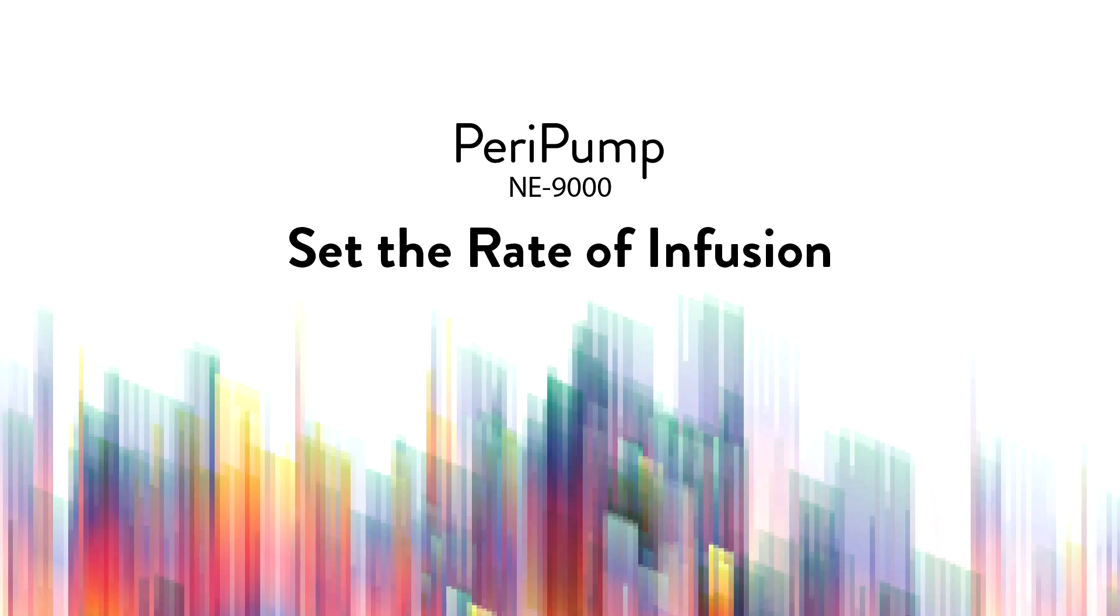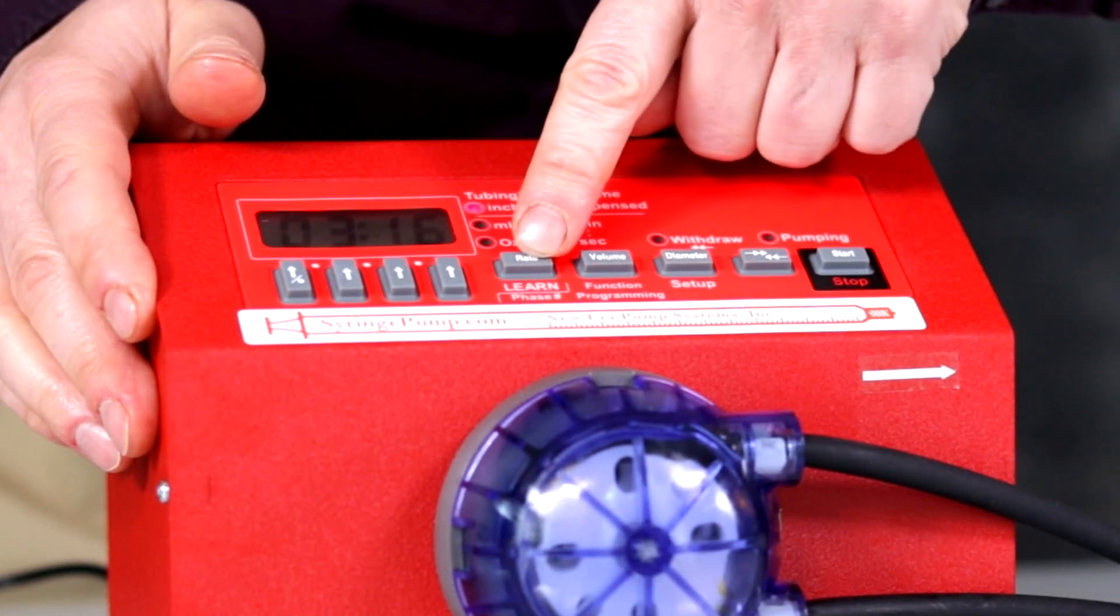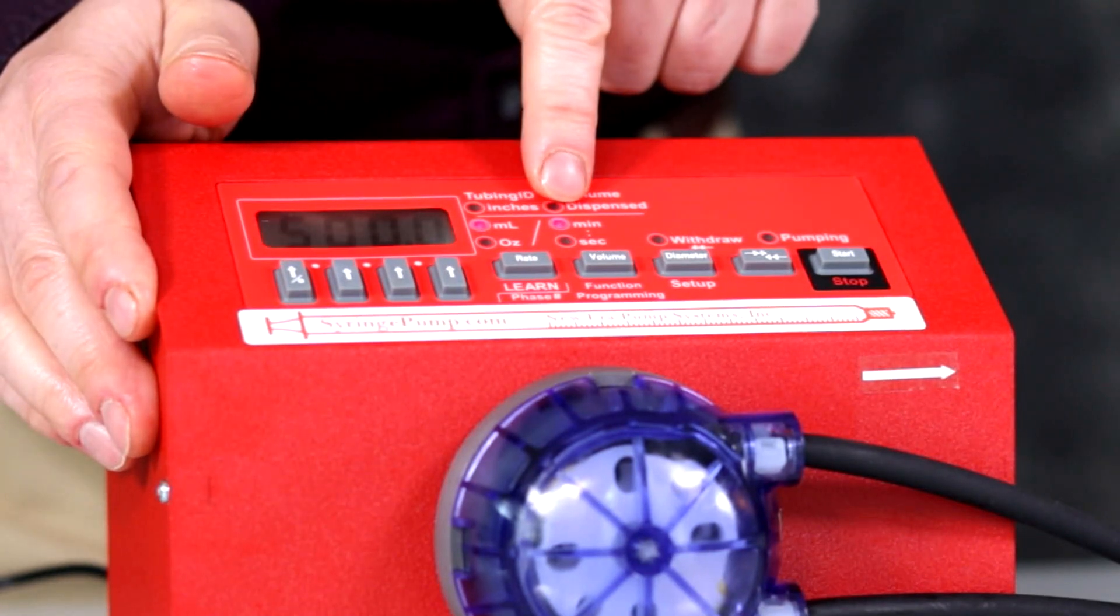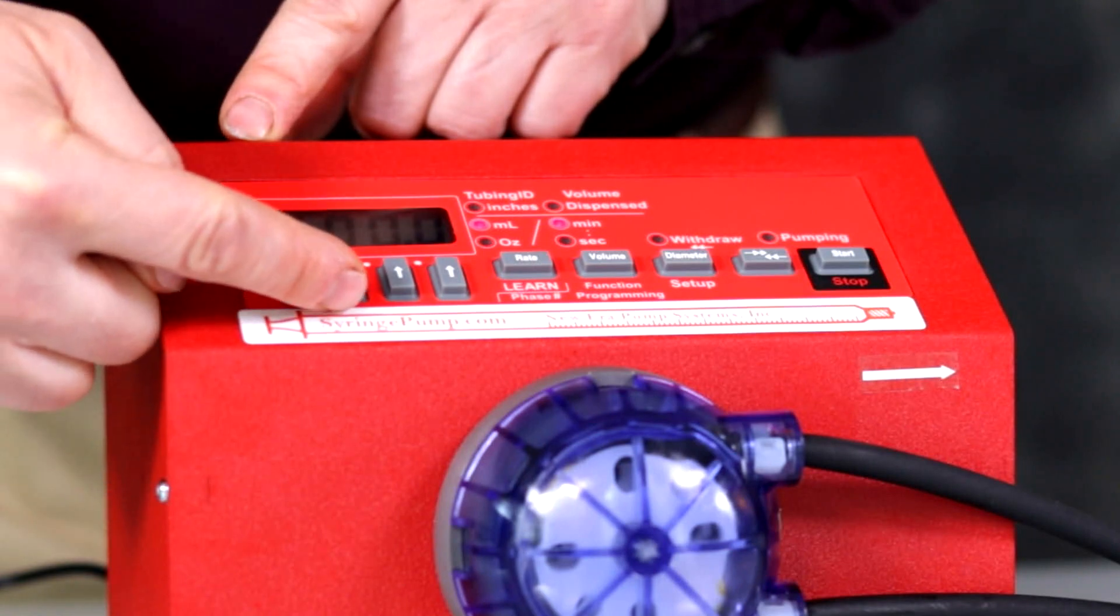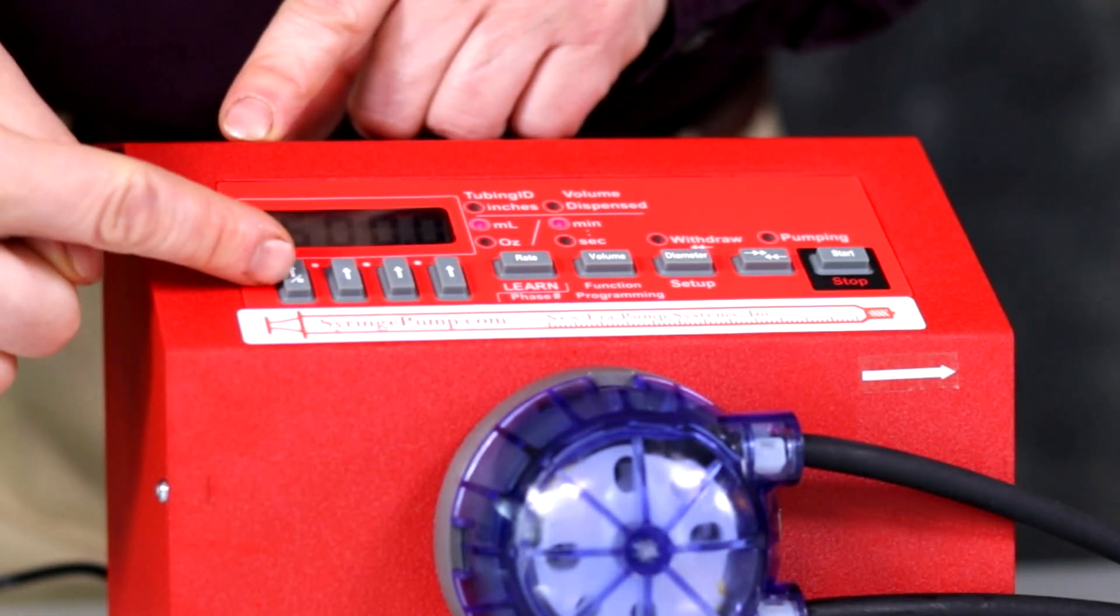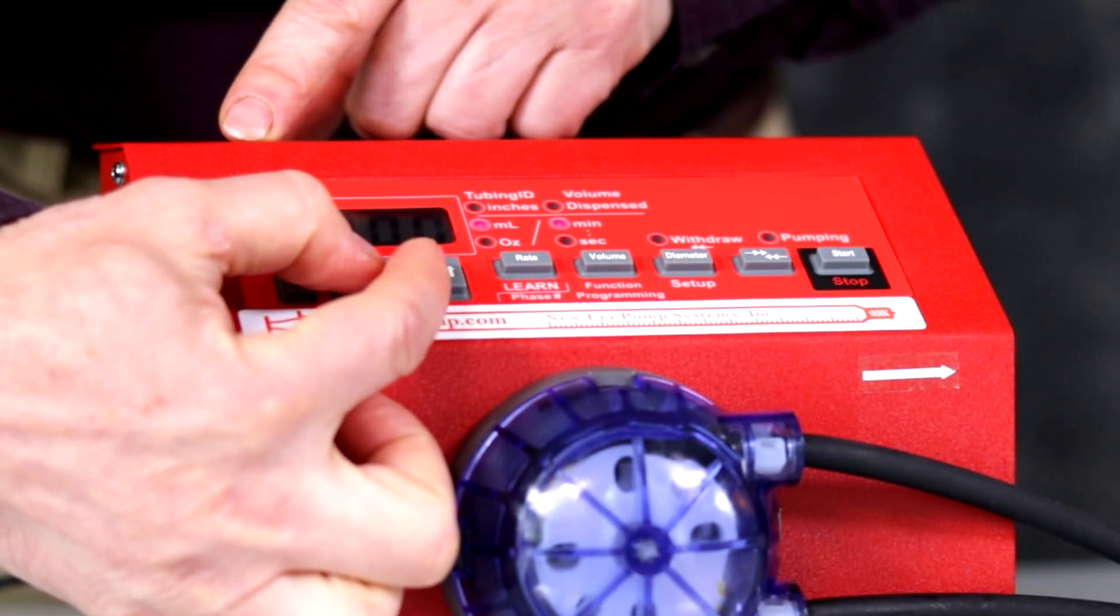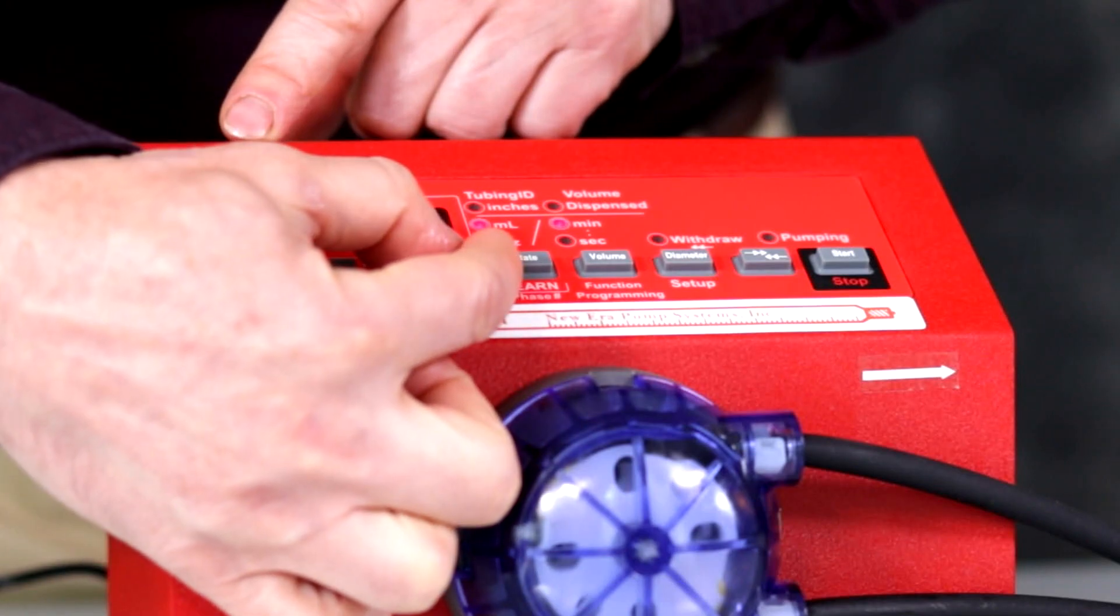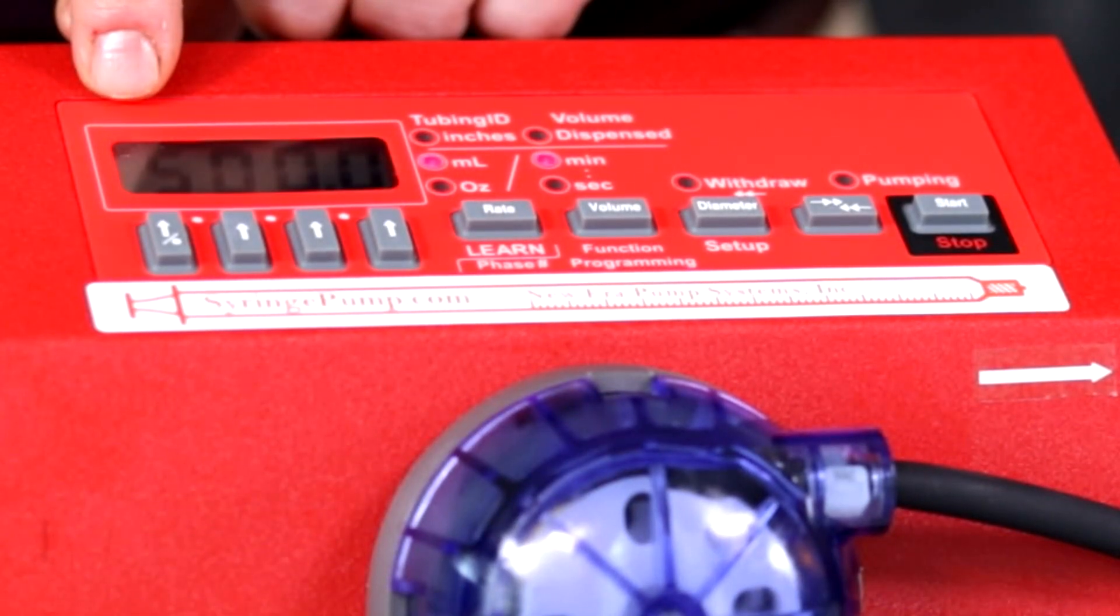Set infusion rate. To set the rate of infusion, press the rate key. The currently stored rate is 500 ml per minute. To change the units of the flow rate, use any up arrow key to change the units. To change the decimal point, simultaneously press both up arrow keys under where you want the decimal point to be. When the blinking stops, the new value is entered. Now you can start running the pump.